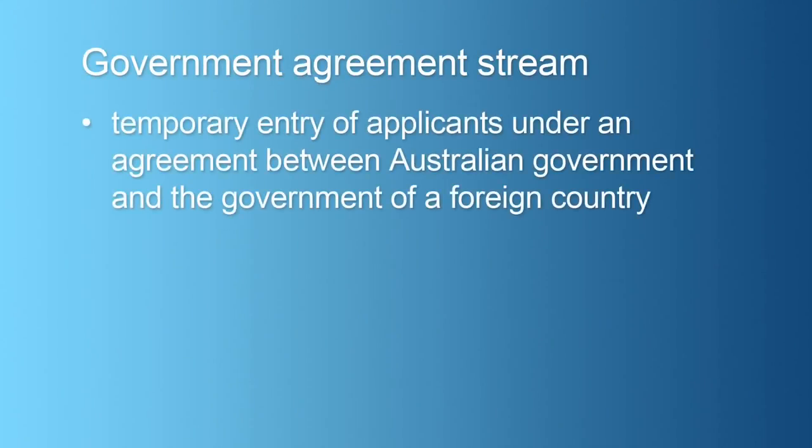The second stream, the government agreement stream, allows the temporary entry of applicants under an agreement between an Australian government, either state or territory, and a government of a foreign country. Applicants will require the support of an Australian signatory and a foreign government to enter Australia under the terms of a bilateral agreement.